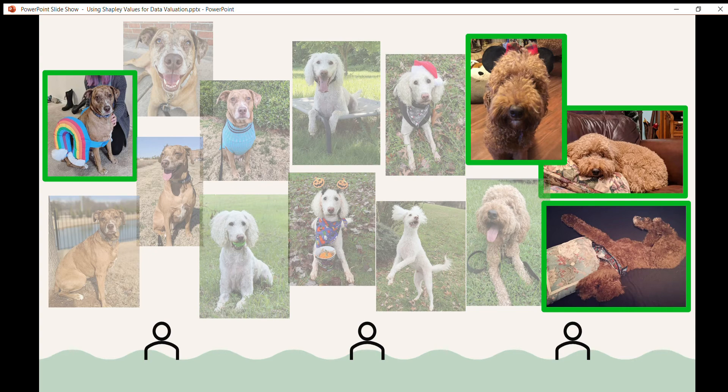So maybe the model had been overfitting to dogs that were outside and overfitting to the background artifacts. So adding images of dogs inside has helped the model generalize.